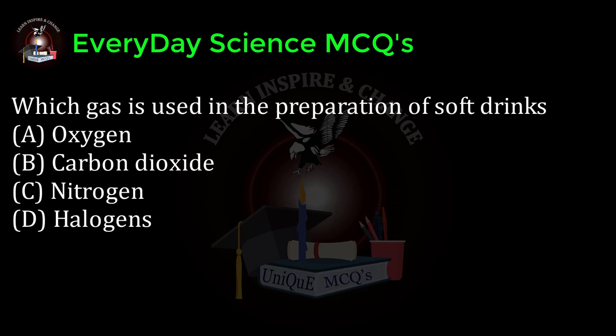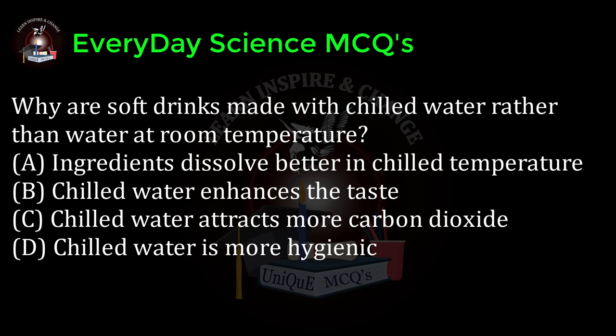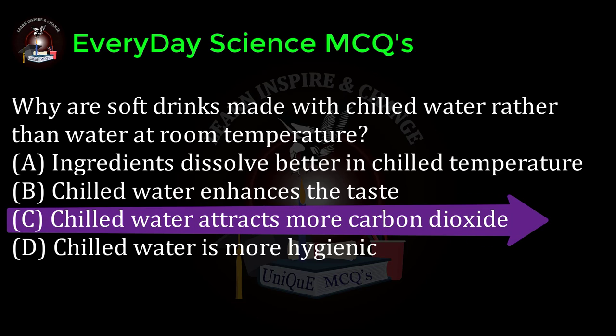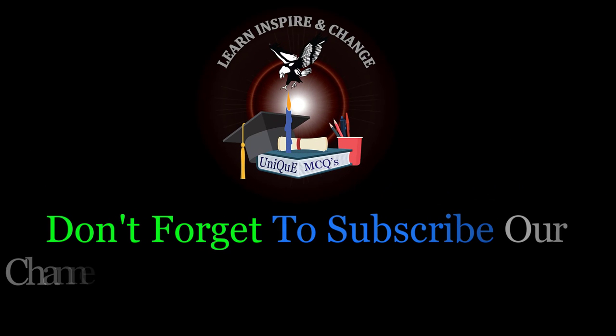Which gas is used in the preparation of soft drinks? a) oxygen, b) carbon dioxide, c) nitrogen, d) halogens. Correct answer: b. Why are soft drinks made with chilled water rather than water at room temperature? a) ingredients dissolve better at chilled temperature, b) chilled water enhances the taste, c) chilled water attracts more carbon dioxide, d) chilled water is more hygienic. Correct answer: c.